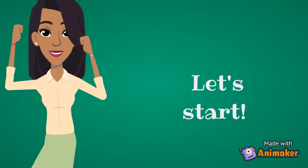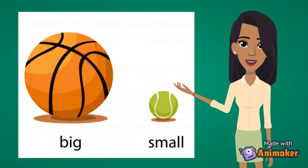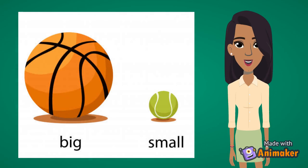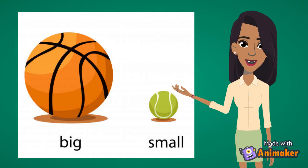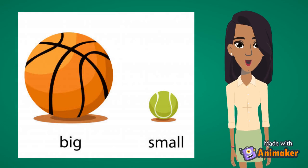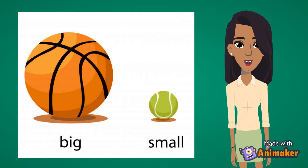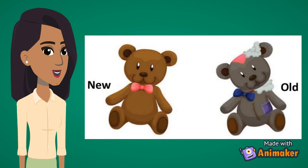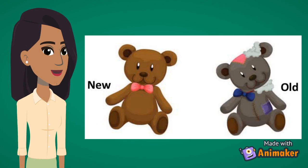Observe the picture, guys. We have got two balls: a big ball — the orange one — and a small ball — the yellow one. Big and small. Now observe the picture: we've got two teddies — a new teddy, the brown one.